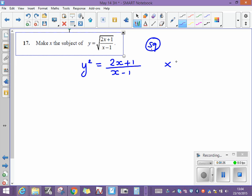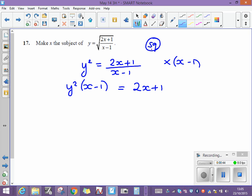So I'm going to now clear the fractions by multiplying by the bottom. So I'm going to multiply both sides by x minus 1. The left side becomes y squared times x minus 1. The right-hand side, because I was dividing by x minus 1 and I'm now multiplying, I'm just left with 2x plus 1.